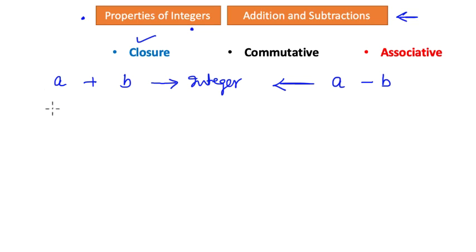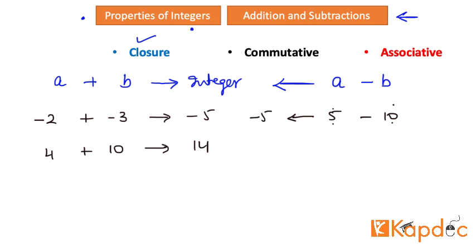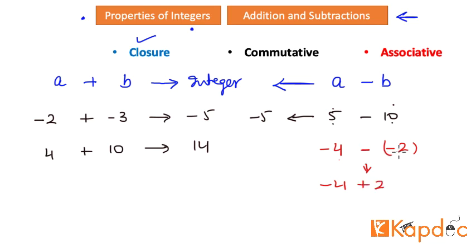Let us look at some examples. Take negative two added with negative three — it results in negative five. Take four plus ten — it results in fourteen. For subtraction: five minus ten gives negative five, since you are subtracting a bigger number from a smaller one. Also, negative four minus negative two is read as negative four plus two, because the two negatives cancel each other, resulting in negative two.